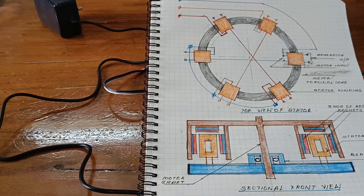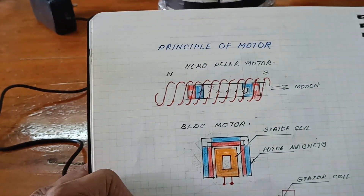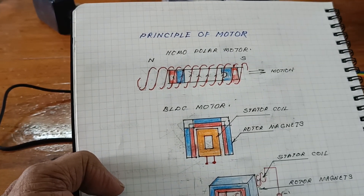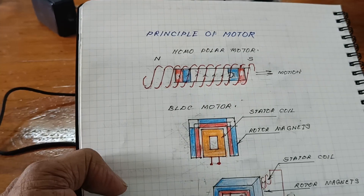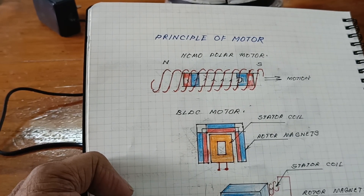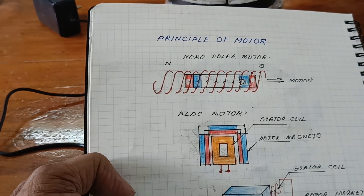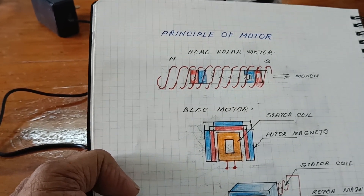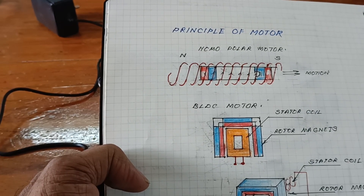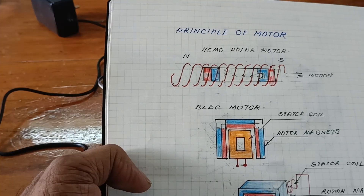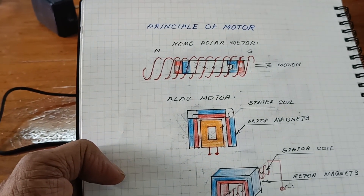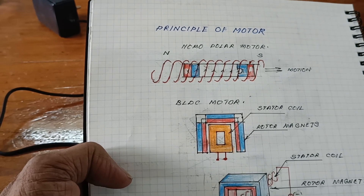Now I am going to explain the principle. We already know the Homo Polo motor. Here, this is the coil, with the magnet and battery inserted inside it. When the battery's positive side is connected to the coil and the negative side is connected to the end of the coil, a polarity is produced — a North Pole and a South Pole of the coil. The North Pole is attracted by the South Pole of the coil, and the North Pole is repelled by the North Pole of the coil. Hence the magnet with the cell tries to move forward.